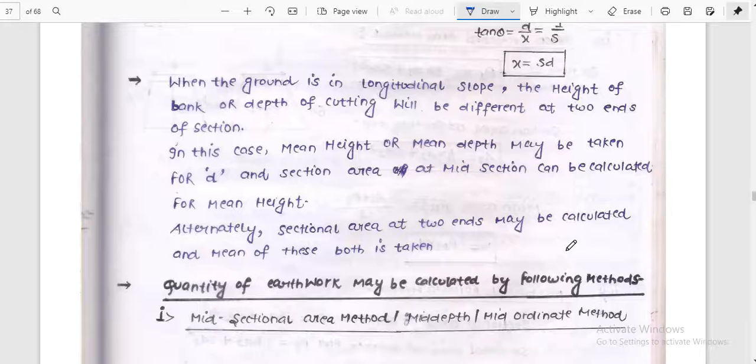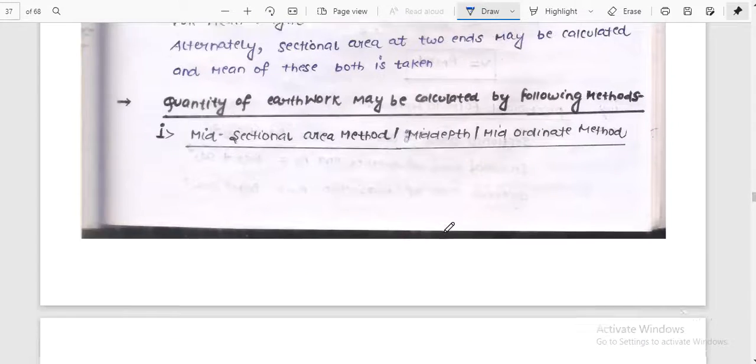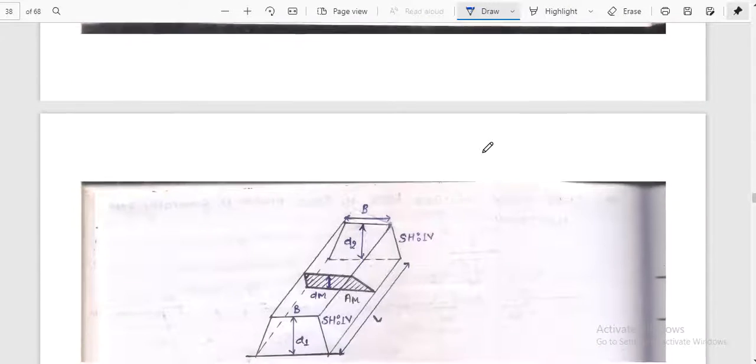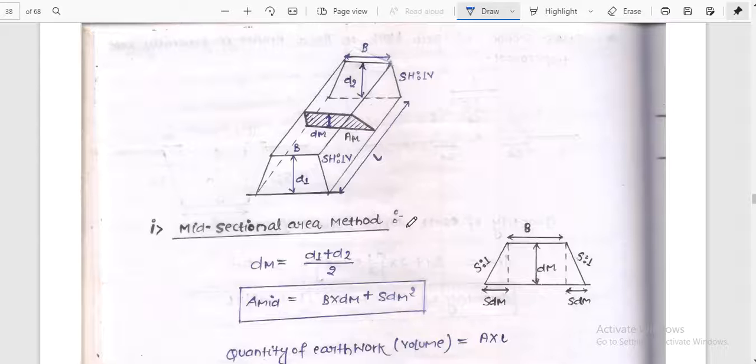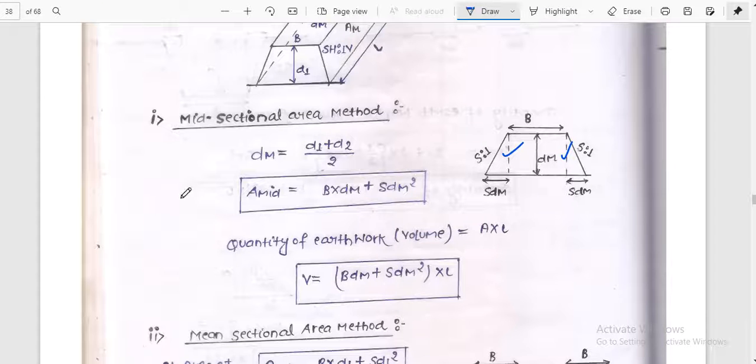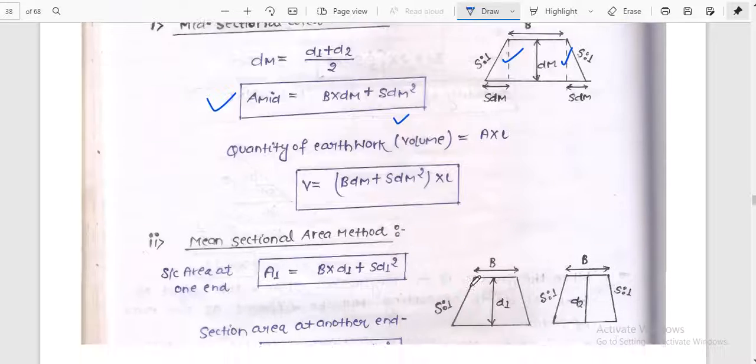Alternatively, sectional area of two ends may be calculated and mean of this is taken. For example, mid sectional area method and mid depth or mid ordinate method. In mid ordinate method, Dm will be D1 plus D2 by 2. If this is D1 and this is D2, then we are just summing up and taking the average. Quantity of earthwork is B into Dm plus SDm squared into L.